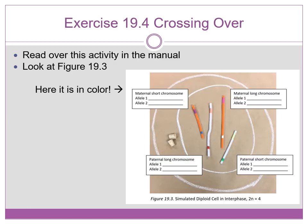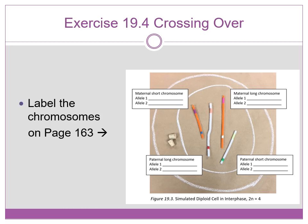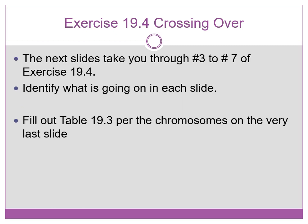In your manual for figure 19.3, you will identify homologous chromosomes. Reading over the activity, please label the chromosomes on page 169. The following slides take you through steps three to seven of exercise 19.4. Please identify what is going on in each slide. After this, please fill out table 19.3, looking at the chromosomes on the very last slide.